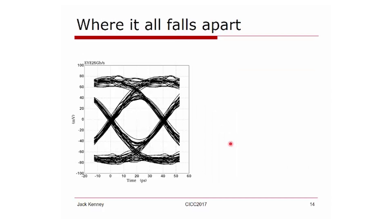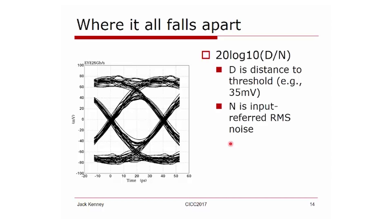So where does this all fall apart? On the left we show an eye where the transmit filter has been optimized but it's running at 25 gigabits per second.